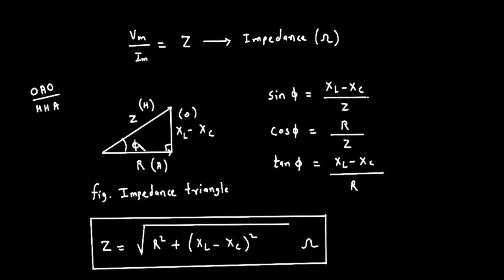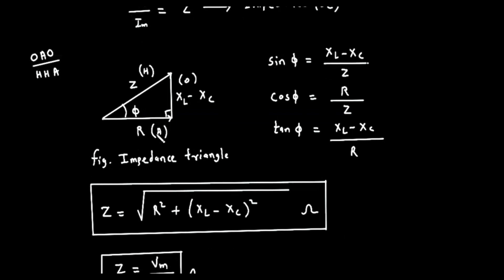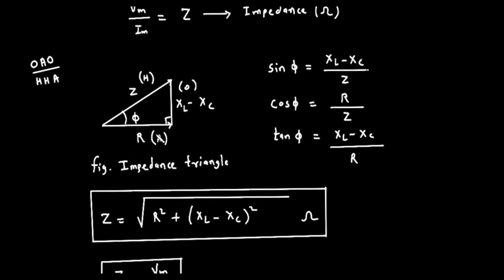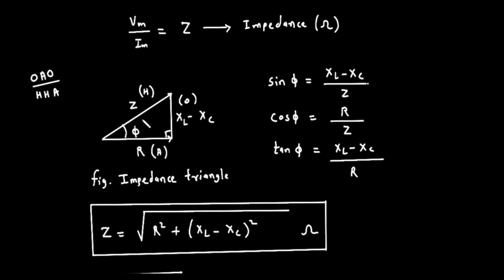Part 4, The Power of the Impedance Triangle. This impedance triangle is incredibly powerful because it allows us to use simple trigonometry to find the key properties of our circuit. You might remember the mnemonic SOHCAHTOA. Sine of phi is opposite over hypotenuse. Looking at our triangle, this means Sine of phi equals the quantity, X sub L minus X sub C, divided by Z.